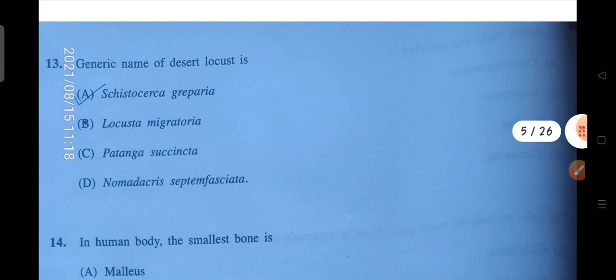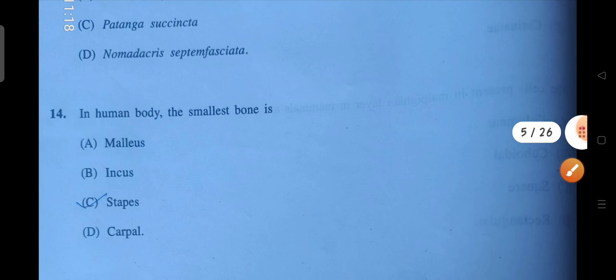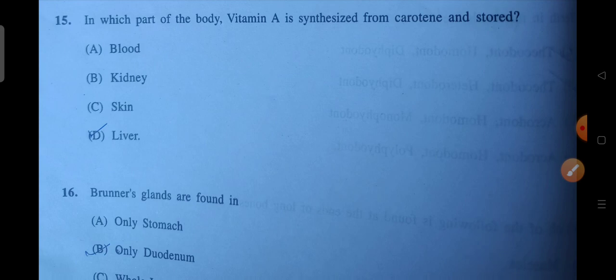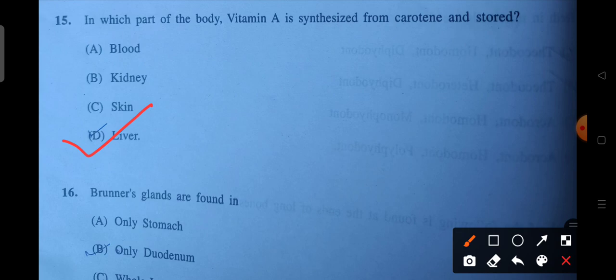Next question is generic name of desert locust. So A will be the correct answer. Next is in human body the smallest bone is. So you will know what smallest bone is, stapes, because it is found in your ears. So C will be the correct answer. Next is in which part of the body vitamin A is synthesized from carotene and stored? So liver, D is the right answer.